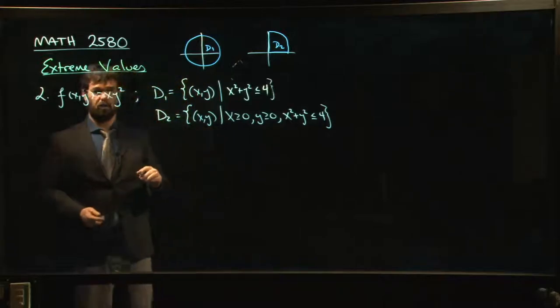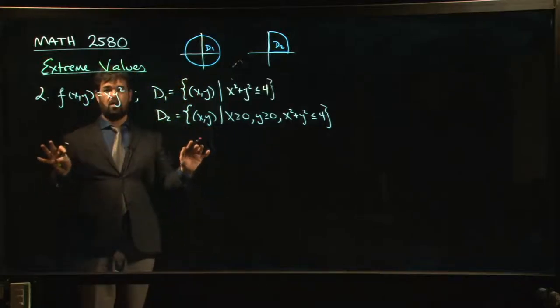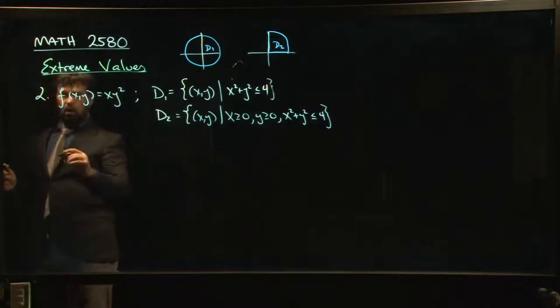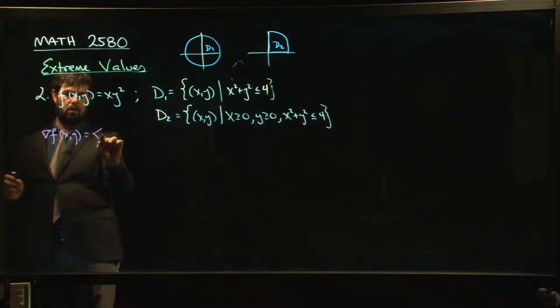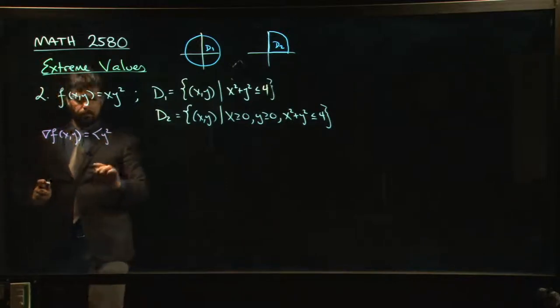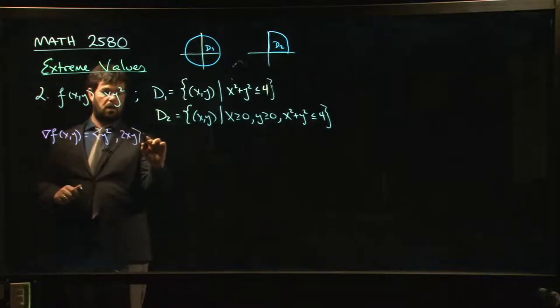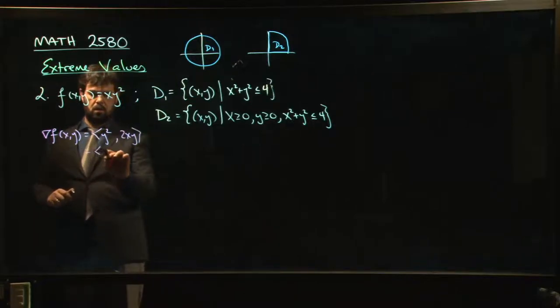First, we've got to look for critical values. So critical values are potentially extreme values, they tell us where our local extreme values might be, at the very least. So let's compute our gradient. So our gradient looks like y squared, and then 2xy, and we want that to be equal to 0, 0.